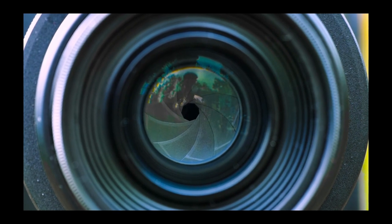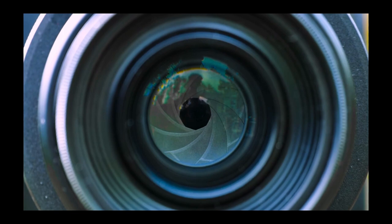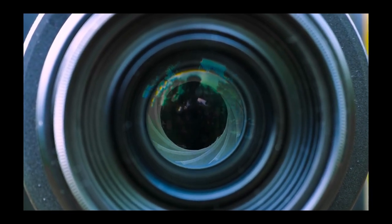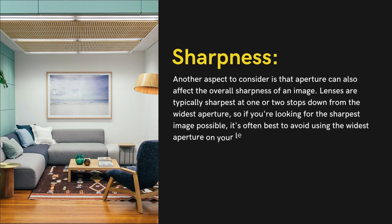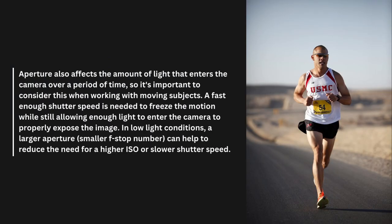Aperture is a characteristic of a lens, meaning it can vary from lens to lens. Some lenses, such as those in compact cameras and smartphones, have a fixed aperture, while others — such as those in DSLRs and mirrorless cameras — allow for an adjustable aperture. Lenses are typically sharpest at one or two stops down from the widest aperture, so if you're looking for the sharpest image possible, it's often best to avoid using the widest aperture. Aperture also affects the amount of light entering the camera over time, so it's important to consider this when working with moving subjects. In low-light conditions, a larger aperture (smaller f-stop number) can help reduce the need for a higher ISO or slower shutter speed.